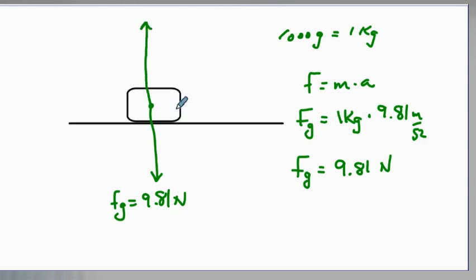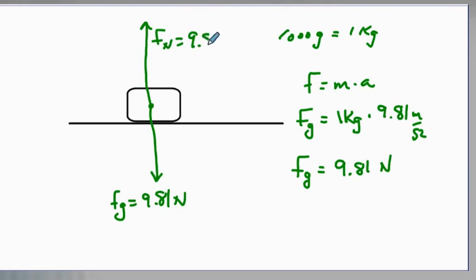But that object is not moving — it's sitting on my desk. According to Newton, my desk is putting an equal and opposite force on it. So in the upward direction I have a normal force of 9.81 newtons. These two forces are equal and opposite, and the normal force is perpendicular to the surface where the object is resting.